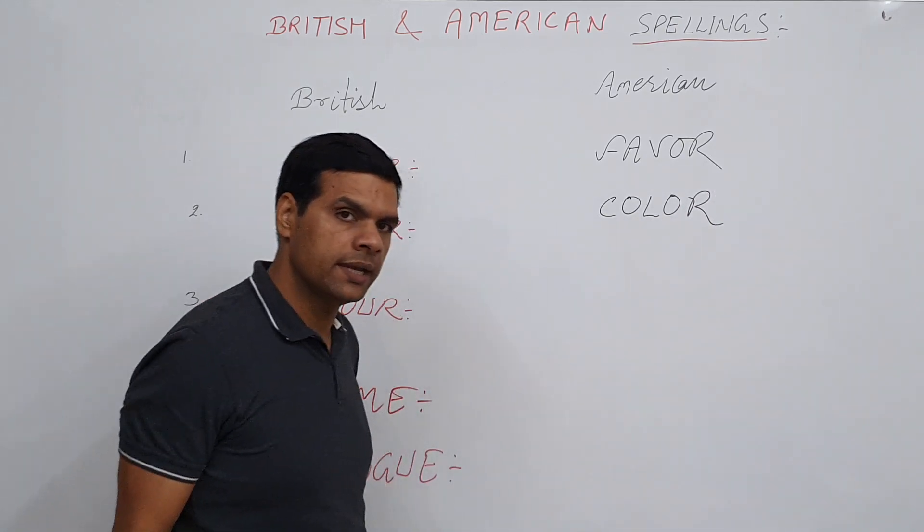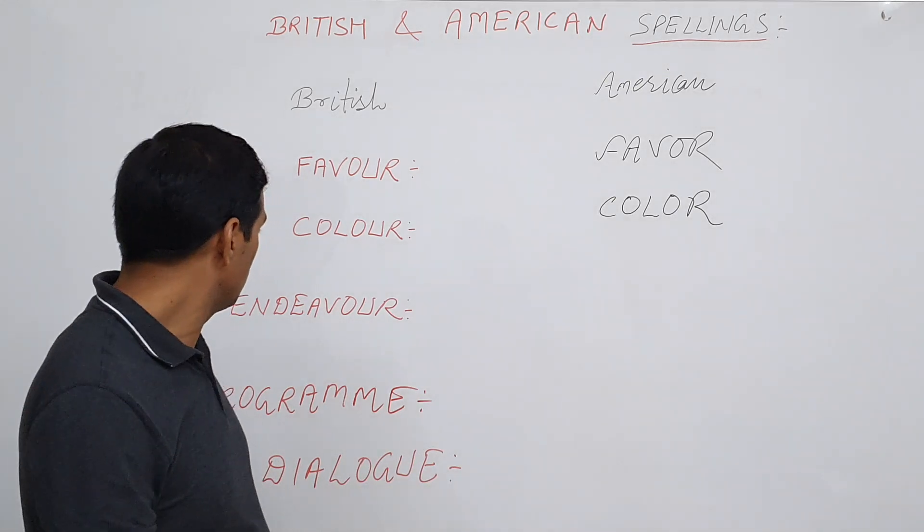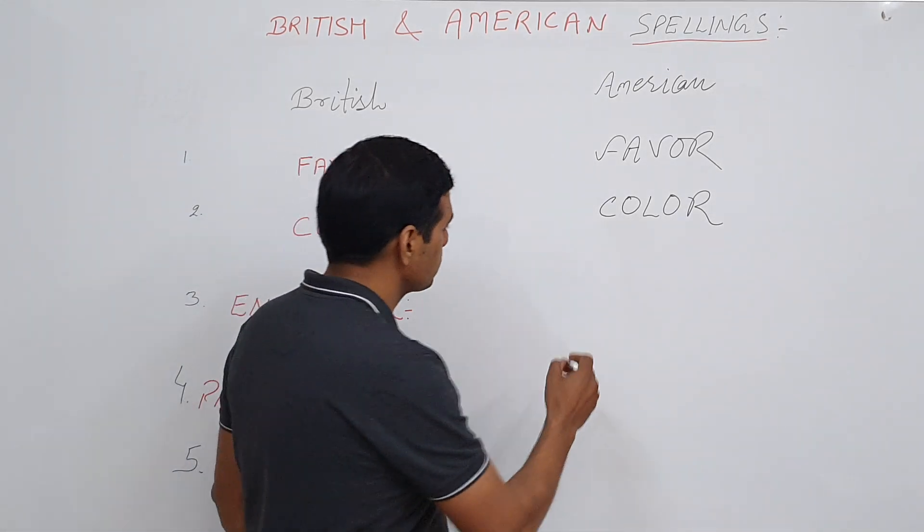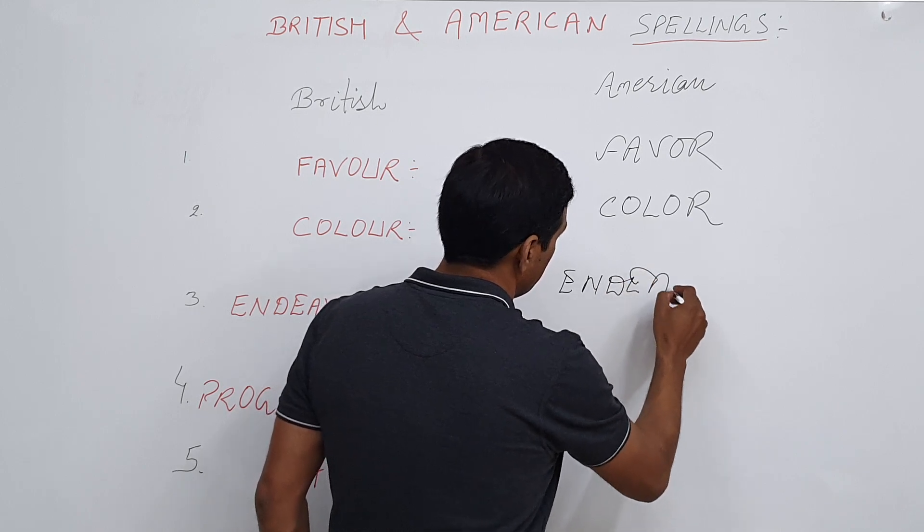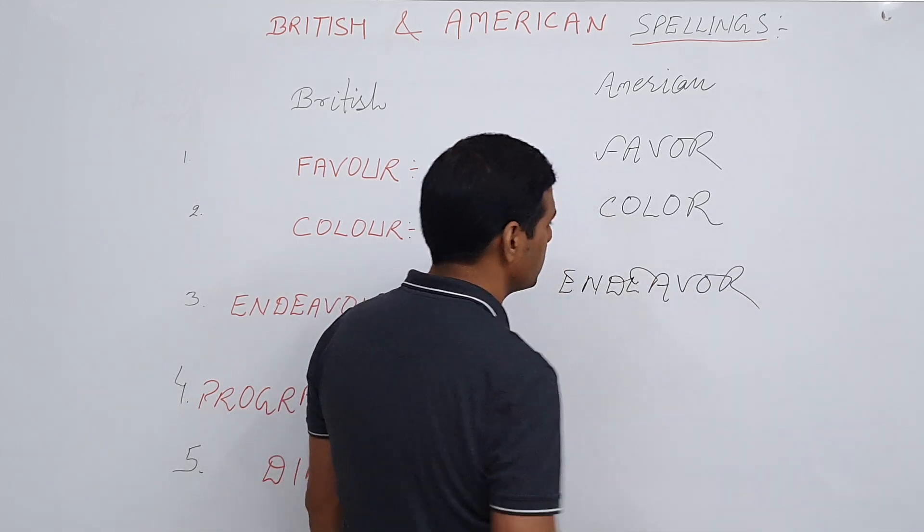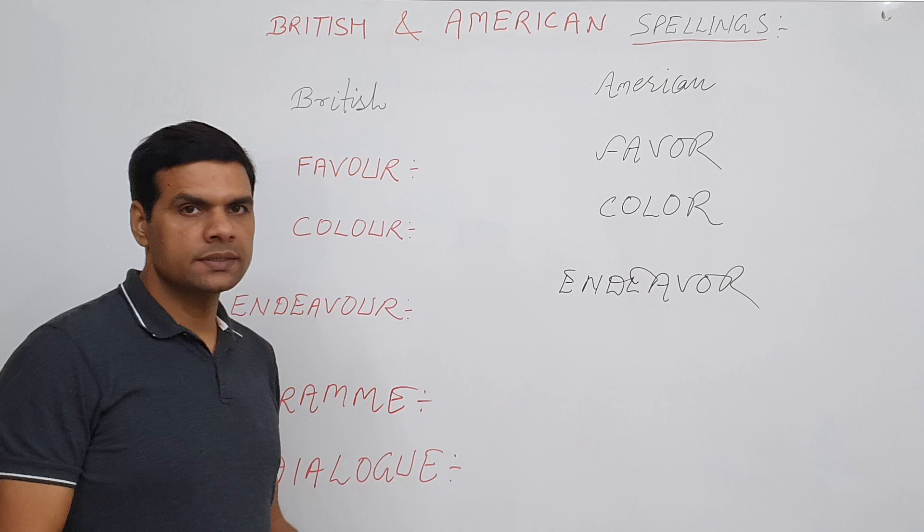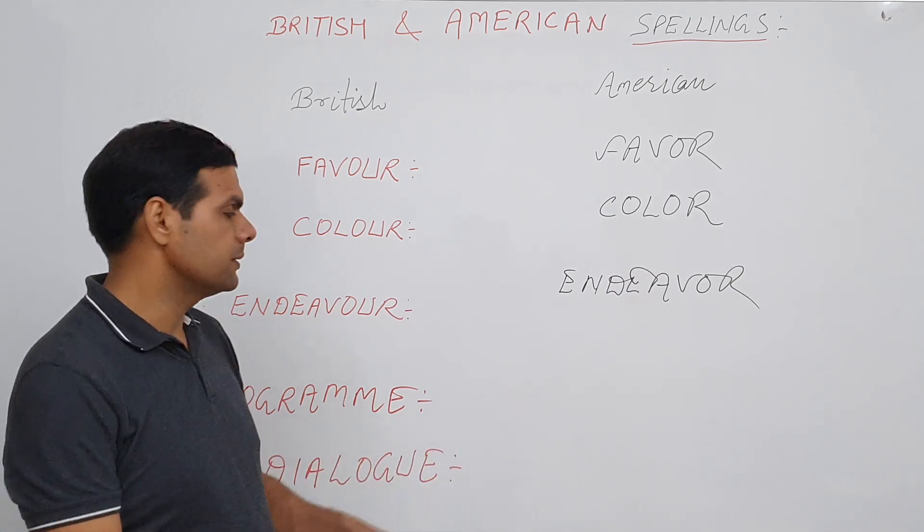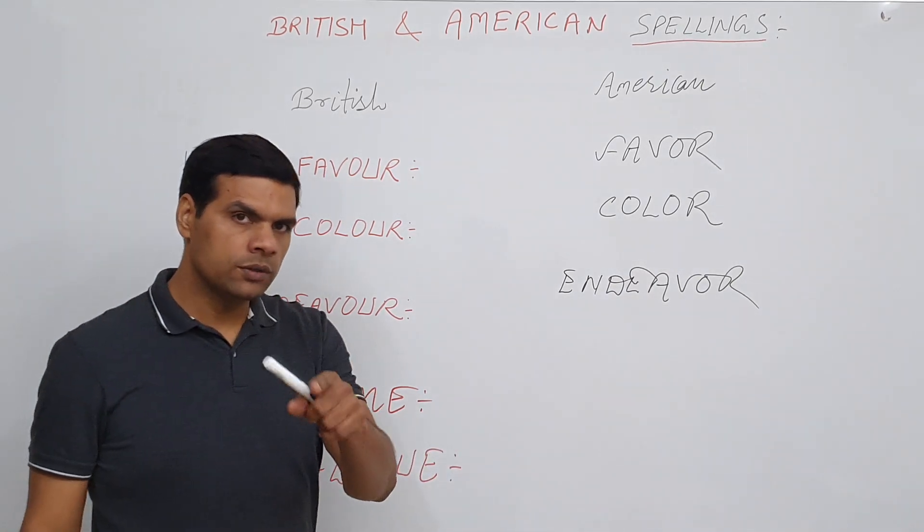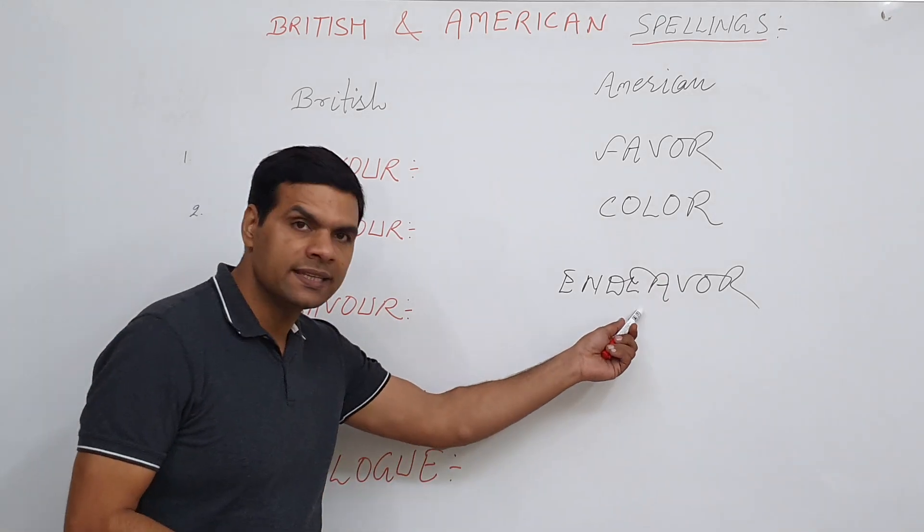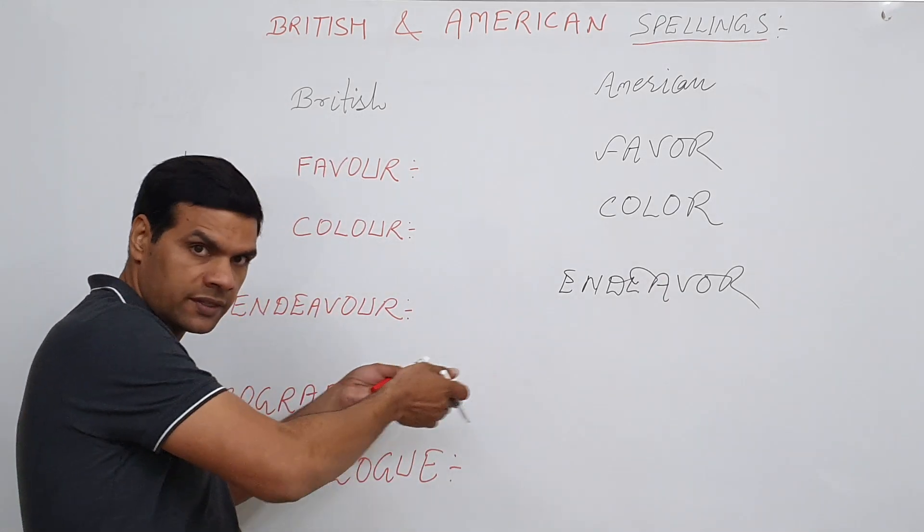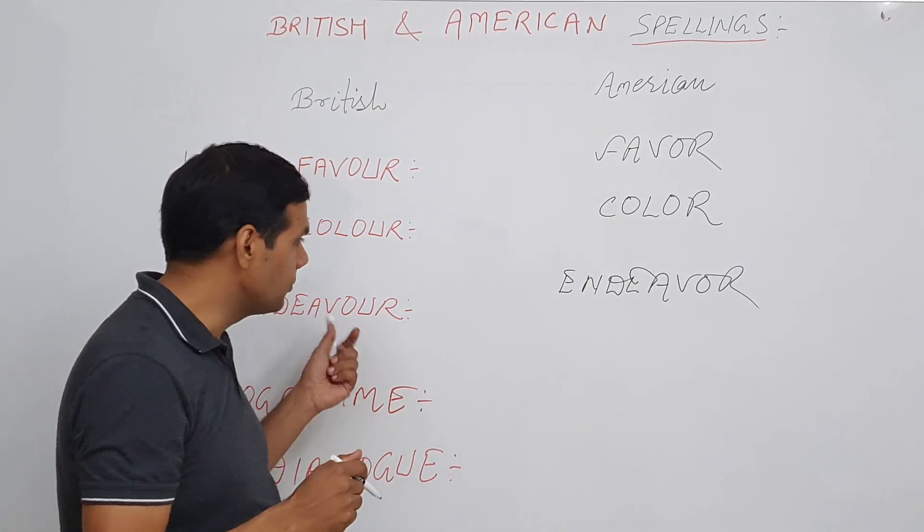Then the next word is endeavor: E-N-D-E-A-V-O-R. This is how Americans spell this word. When you type on Microsoft computers, you will find that this spelling is accepted and the British one is not. The British one is frequently underlined in red, and then you have to correct it to the American way.